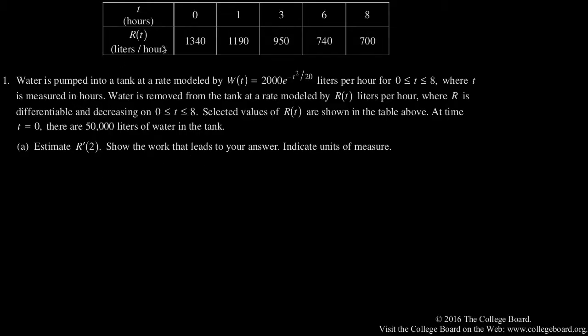So we have a table and a paragraph with another function in it. We know that water is pumped into a tank at this given rate for times between 0 and 8, and water is removed from the tank at the rate indicating this table for times from 0 to 8 at select values. We also know that at the beginning there are 50,000 liters of water in the tank.